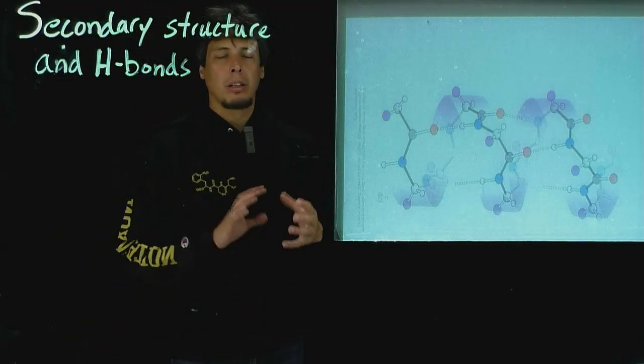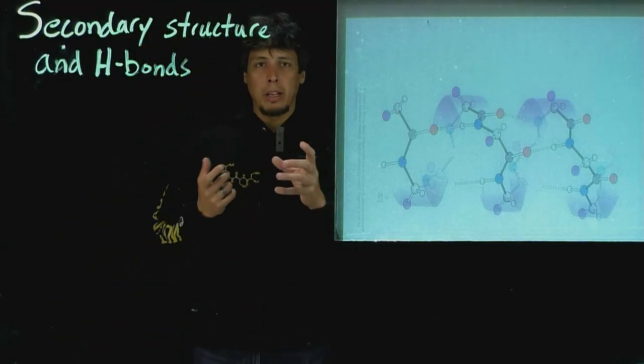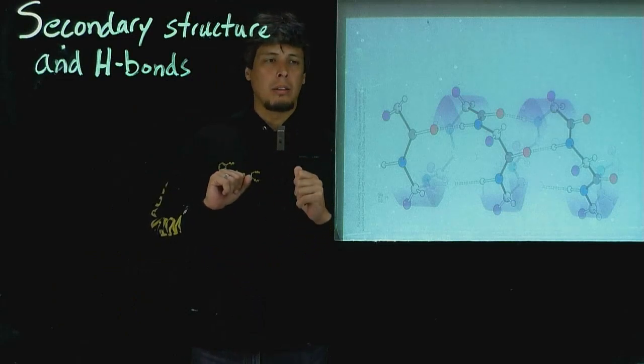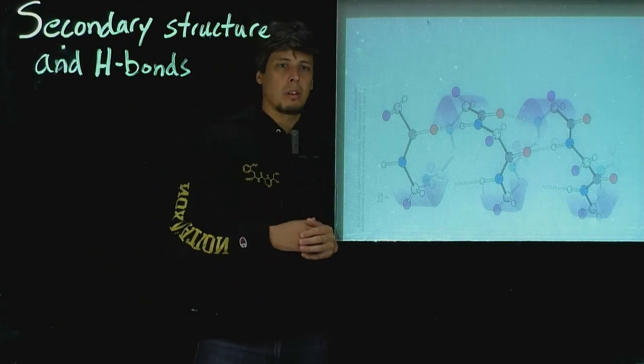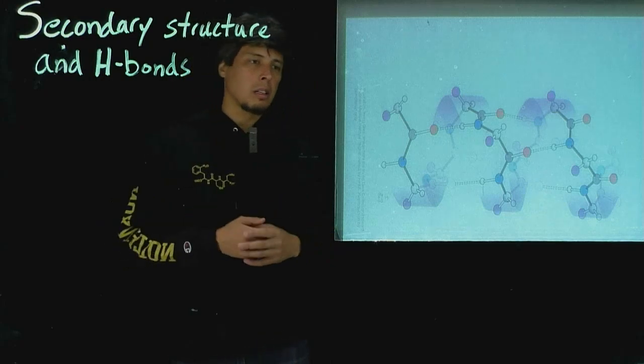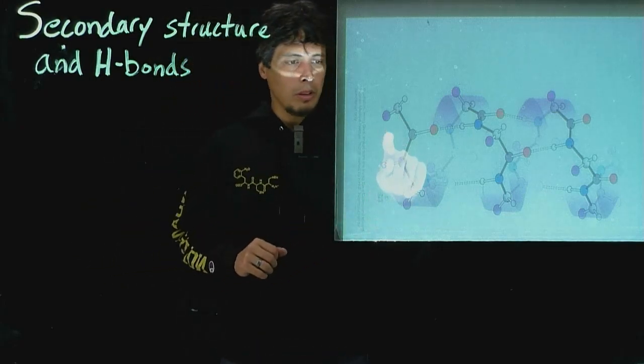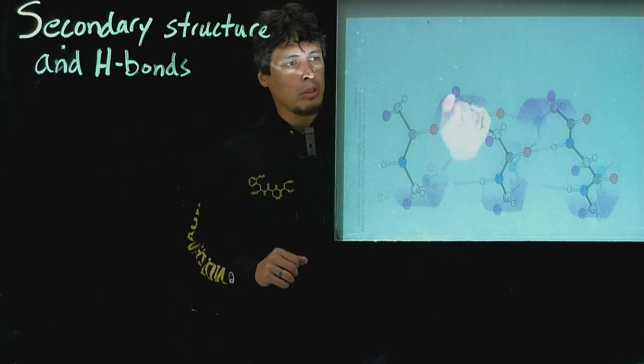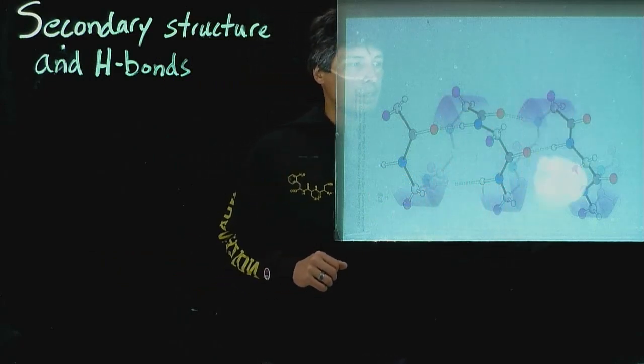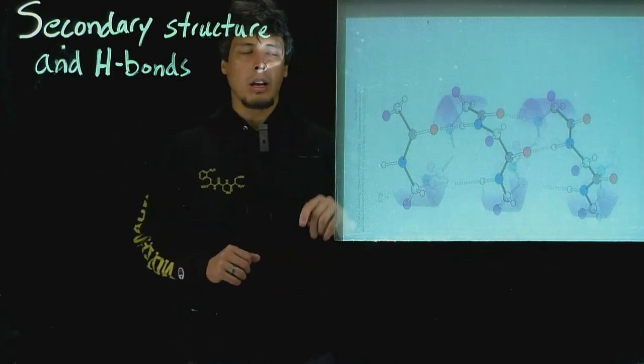Now how does hydrogen bonding between different peptide bonds stabilize these secondary structures? Let's look at this in the context first of an alpha helix. Here's the ribbon, the purple ribbon is shown, which shows the right-handed orientation of the twist of the alpha helix.